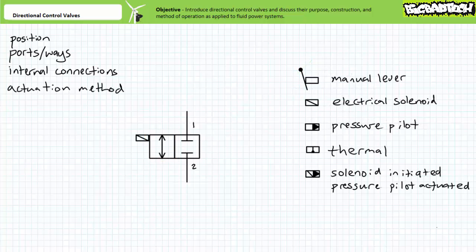Shifting a valve from position to position is the act of moving internal components like poppets, sliding plates, or spools to selectively connect or disconnect ports via the internal passageways machined into the valve body. Repositioning the movable components is known as the act of actuating the valve. Actuation methods include, but are not limited to, manual levers, foot pedals, push buttons, mechanical linkages, thermostats, electrical solenoids, pressure pilot, or a combination of these methods, like a solenoid-initiated pilot-actuated valve as is commonly illustrated for poppet-style solenoid-operated directional control valves.